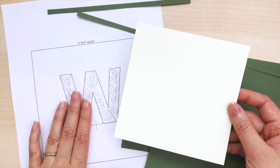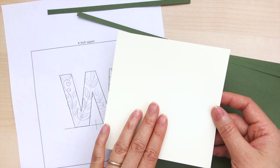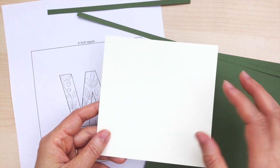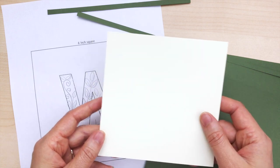Now I've already traced my letter W onto my cream cardstock. If you watch some of my earlier videos, you can see how I go about doing that. I'll also leave a link in the notes below.